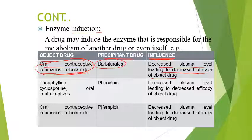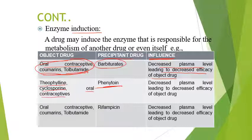The same applies with phenytoin. Phenytoin is the precipitant drug. Phenytoin will induce the enzyme metabolizing theophylline, cyclosporine, and oral contraceptives. Similarly, rifampicin acts on the same drugs.